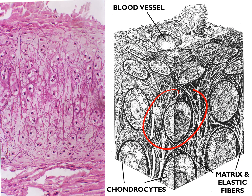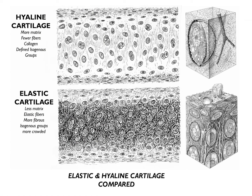Comparing hyaline and elastic cartilage: hyaline cartilage has more matrix but collagen fibers; elastic cartilage has less matrix but abundant elastic fibers, making it more fibrous. The lacunae in elastic cartilage are bigger and closely packed, whereas in hyaline cartilage they are smaller with more space between them. Both have a perichondrium on the outside.